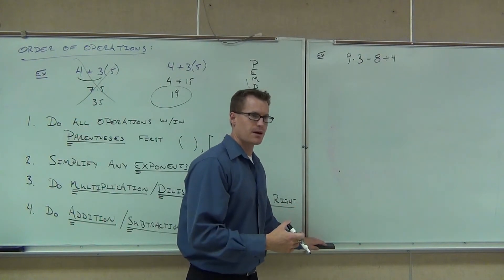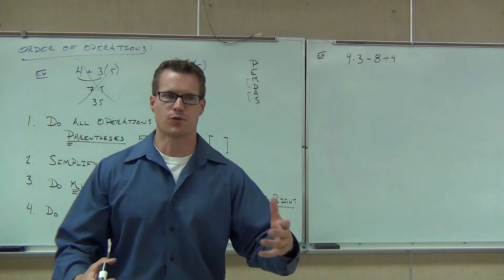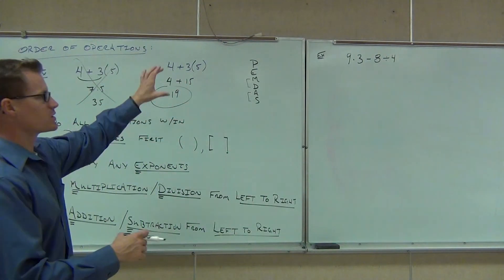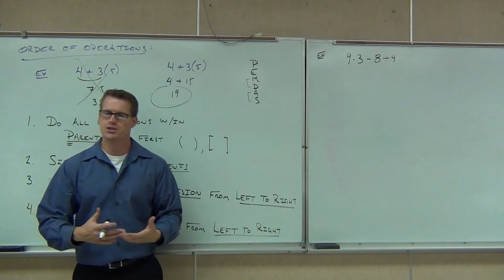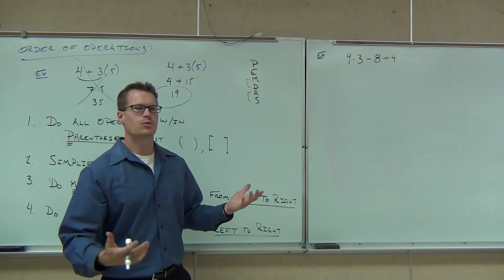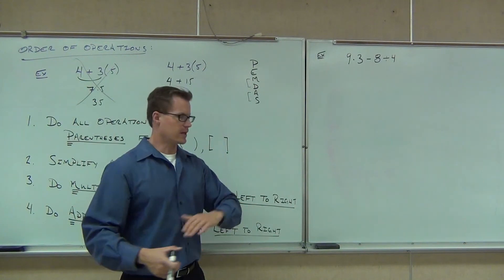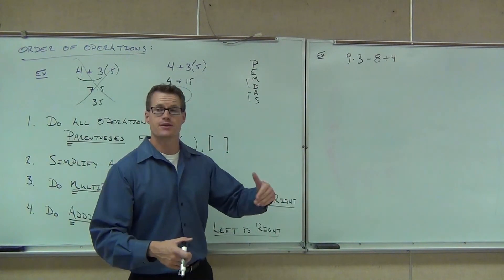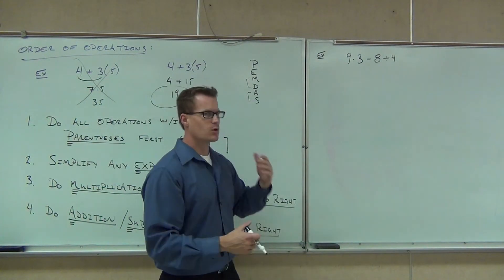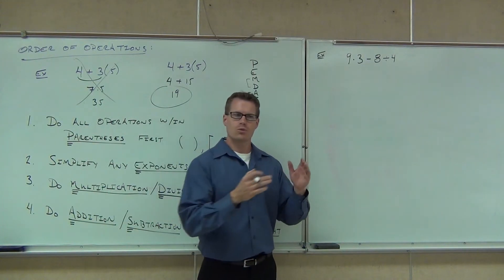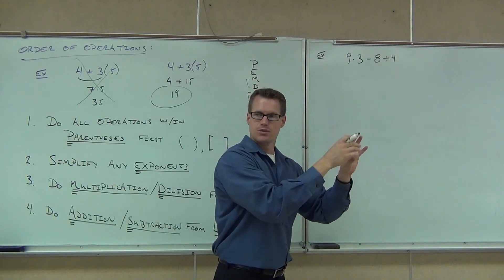I'm going to help you through the first two, then have you do two on your own. When I look at this problem, I'm initially looking for any parentheses. If I don't have any, I move on. So I look and go — no parentheses. Move on to exponents — no exponents. The next step is multiplication and division. Do we have any multiplication or division? Yes. Whatever one comes first left to right, that's what we do. We do that piece and then rewrite the problem.